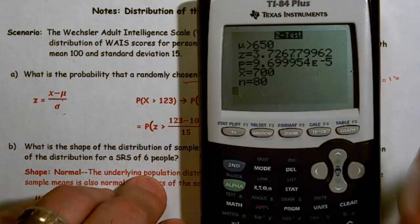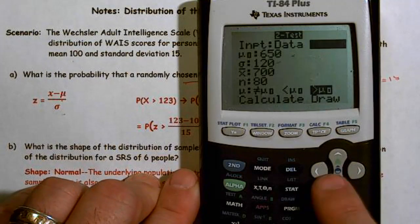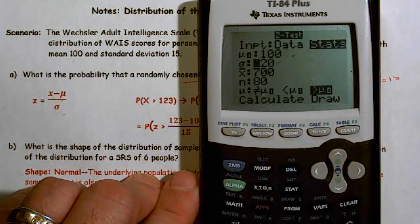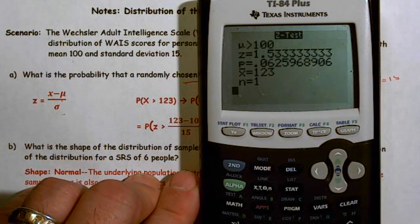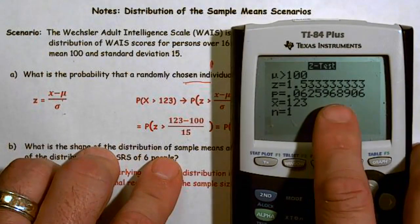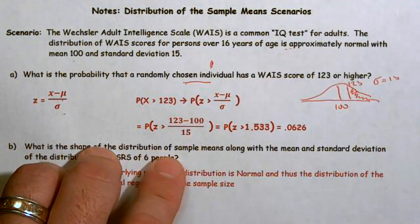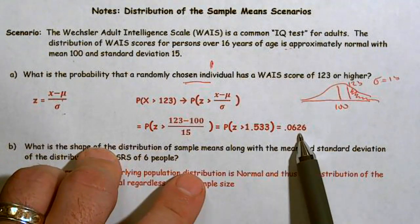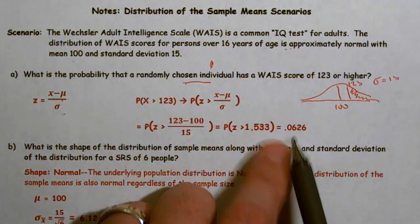I could have done that through the stats test — the z-test — with a mean of 100, a standard deviation of 15, a score of 123, and a sample size of 1. We end up with z = 1.533, and the probability is about 6%. So there's about a 6% chance that a randomly selected individual would score 123 or higher.